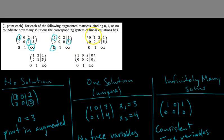The third matrix: the pivots are here and here. There's no pivot in the augmented column, so it's consistent. But there's no pivot in the first column, making x1 a free variable. So we say infinitely many solutions.